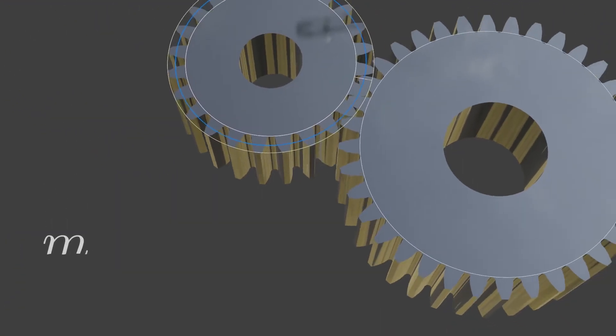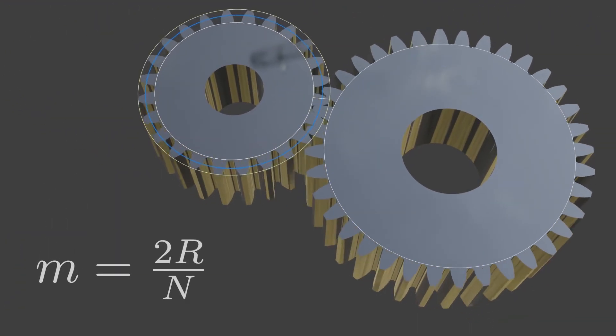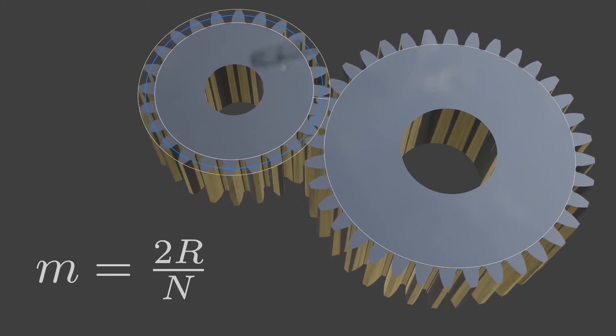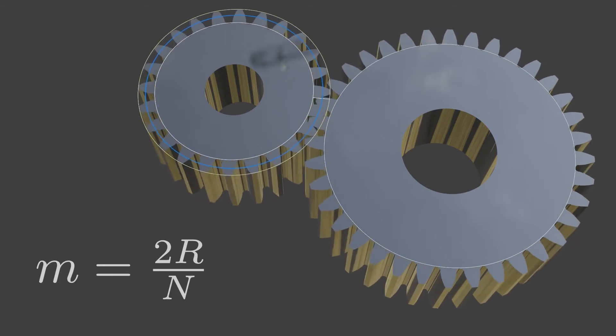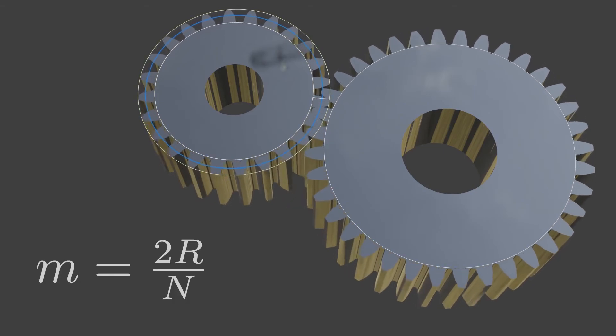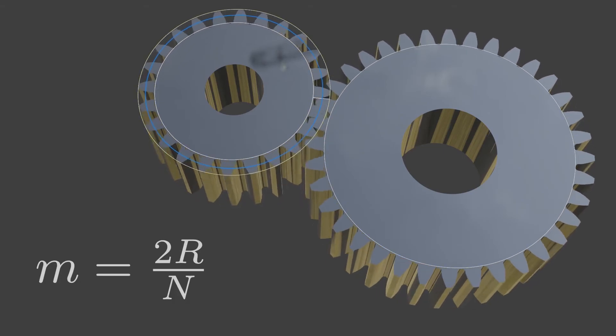The module is the ratio of the pitch diameter of the gear to its number of teeth. That is, smaller values of module denote smaller teeth and vice versa.